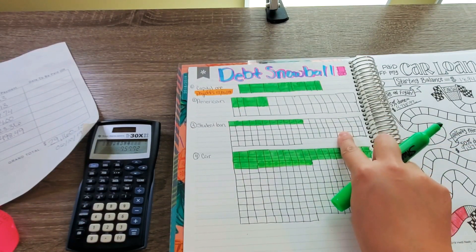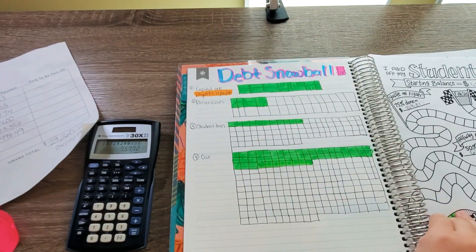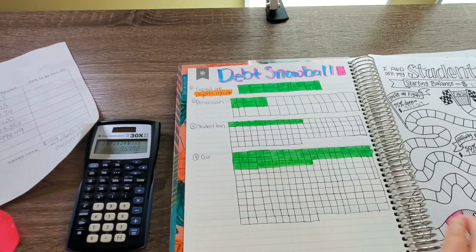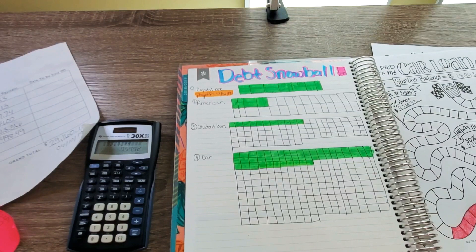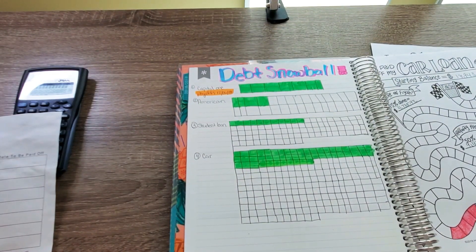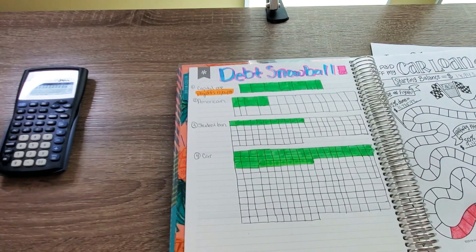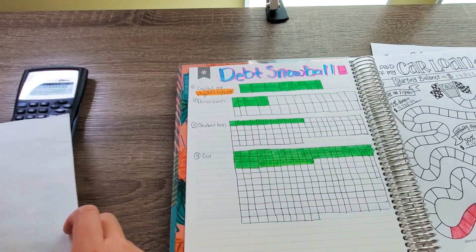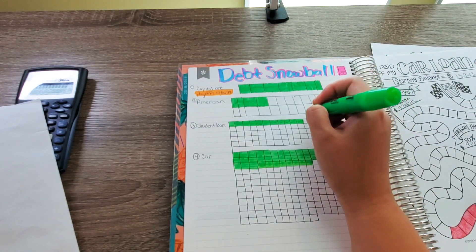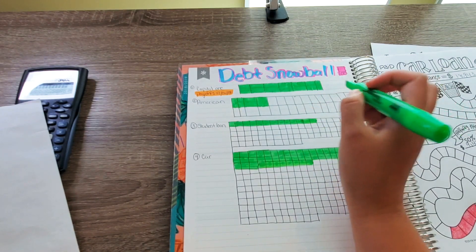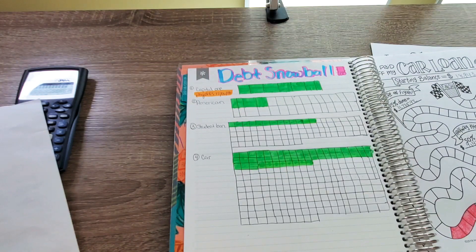Alright. And then student loan, we'll come back to it. American Eagle, we didn't do a lot on that one. Let's see. I'm going to pause it, and then I will be right back and get the numbers real quick so we can highlight it. Alright. So for the student loans, since June, we have paid off $253.94. So we're just going to color in two more. And then American Eagle, we're not going to color anything because we only paid off $90.